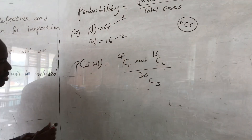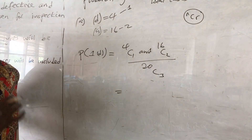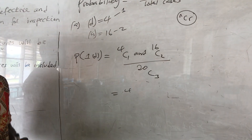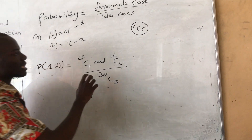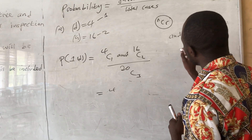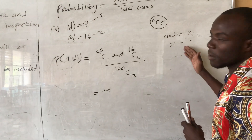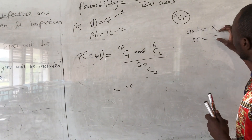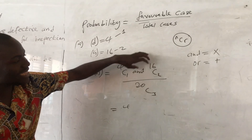So 4 combine 1, which is 4 choose 1, gives you 4. Bear in mind that when you are dealing with probability, 'and' is associated with multiplication, and 'or' is associated with addition. These are the two rules: the multiplication law associated with 'and', and the addition law associated with 'or'. Since we are saying 4 choose 1 and 16 choose 2, this 'and' means we multiply.